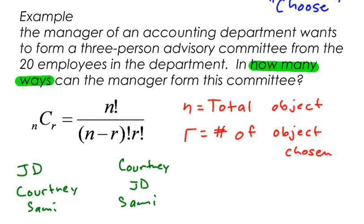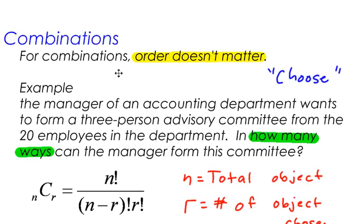It's not like I'm choosing one to be the president and one the vice president and one the secretary. So if, in this case, the order does not matter, that means I'm going to be dealing with a combination, not a permutation.